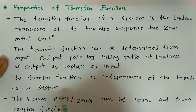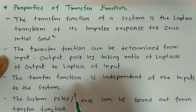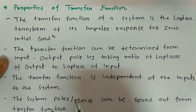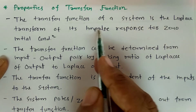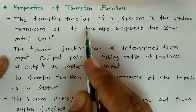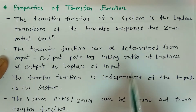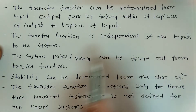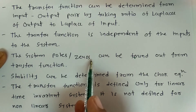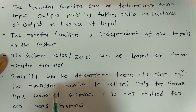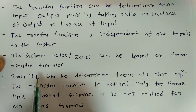Transfer function is independent of input — it is based on the system, not on the input. It gives the ratio of output to input based on the system's response. When we calculate it, we look at the system's impulse response and by taking the Laplace transform we calculate the transfer function. Transfer function gives poles and zeros.